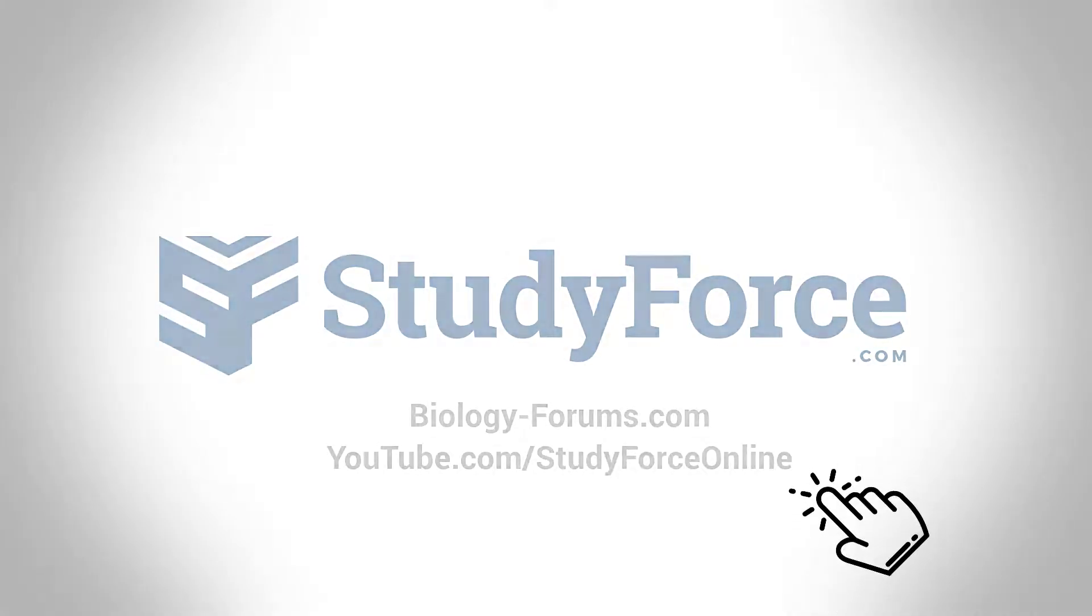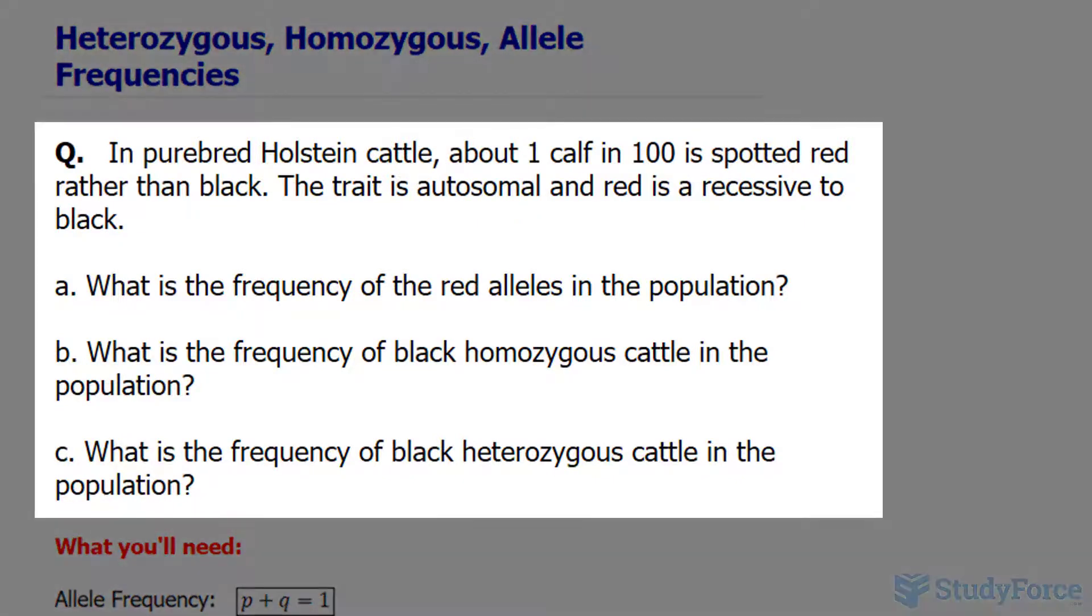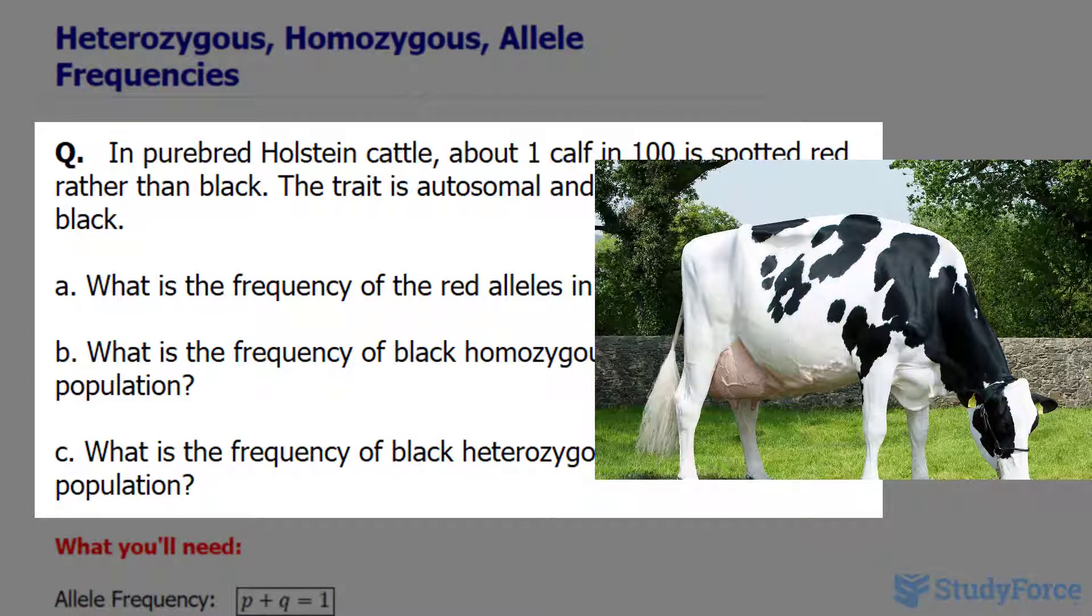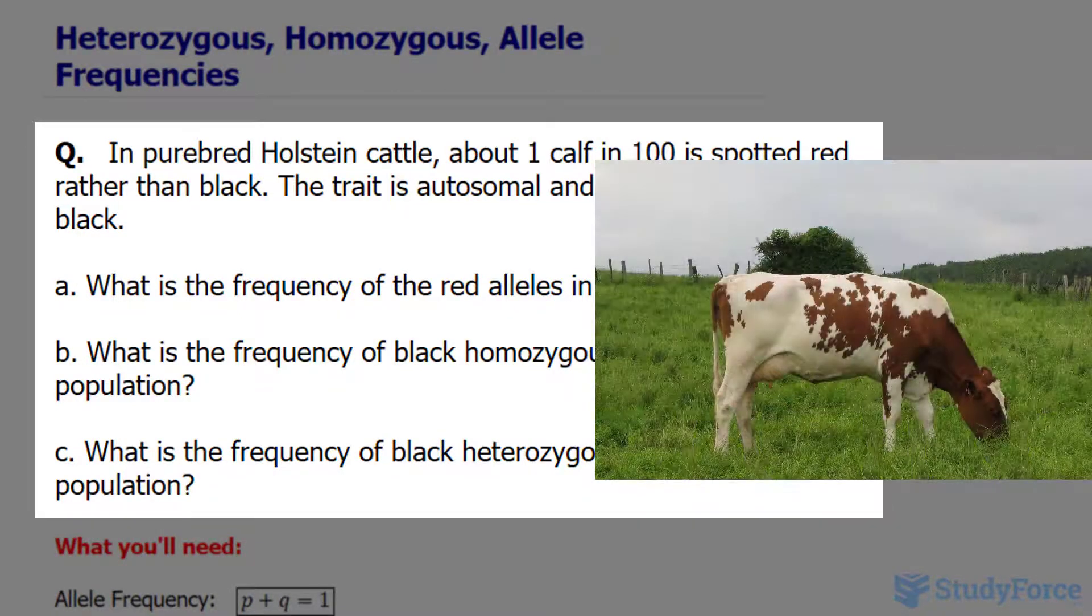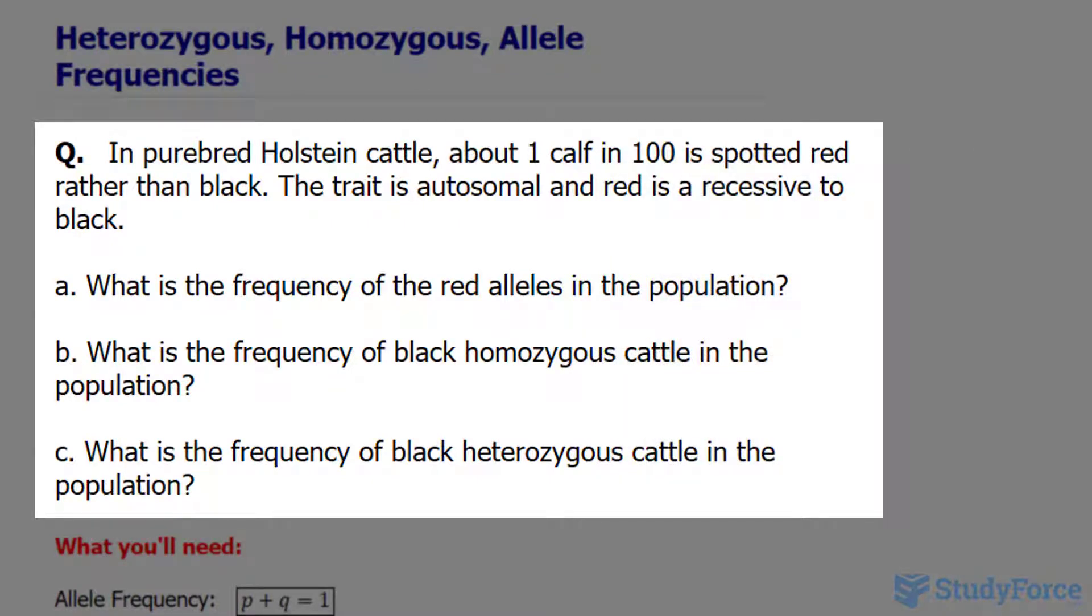In this lesson, I'll show you how to use the Hardy-Weinberg formula to find the heterozygous and homozygous allele frequencies. The question reads: in a purebred Holstein cow, about one calf in 100 is spotted red rather than black. The trait is autosomal and red is recessive to black.